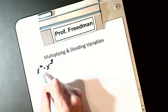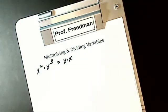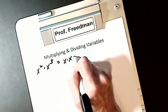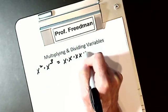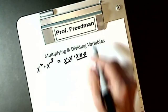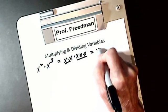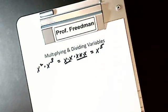By definition, x squared means I have x times x. x cubed means I have x times itself three times. So in reality, I have x times itself five times, which is x to the fifth.